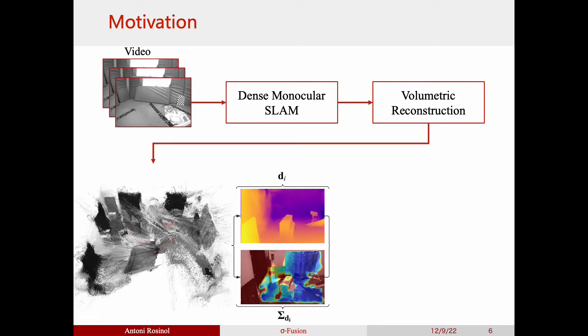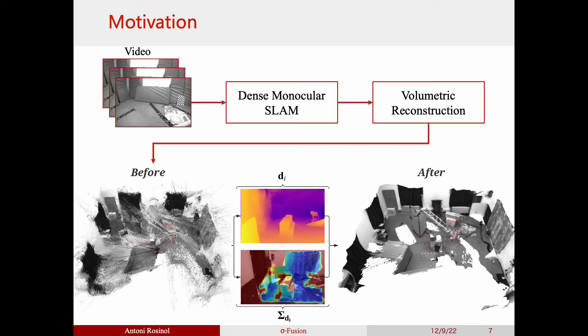Our idea is to calculate not only dense depth maps per frame, but also their uncertainty, given by their marginal covariance. By weighting the depths by their estimated uncertainty, we achieve much better 3D reconstructions.